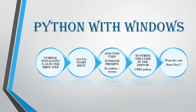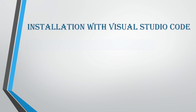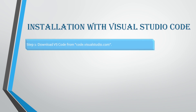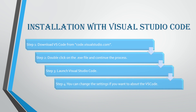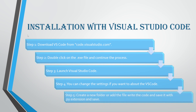The steps for installing Python with Visual Studio Code are: first, download VS Code from code.visualstudio.com — link will be in the description. Second, double click the .exe file and continue the process. Third, launch Visual Studio Code. Fourth, change settings like appearance, dark or light theme, or the path. You can set all of this during installation. Then create a new folder, add a file, write the code, and save it with a .py extension.